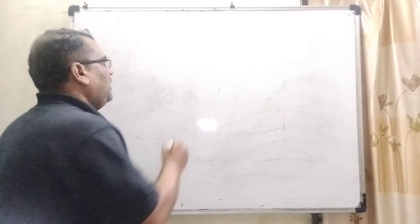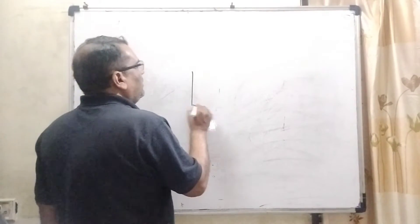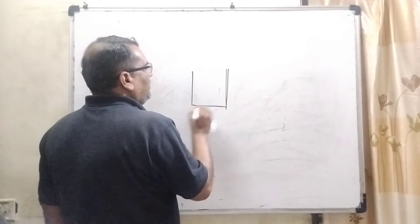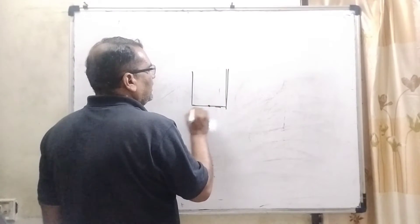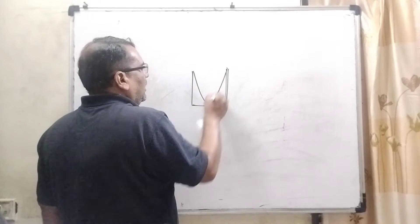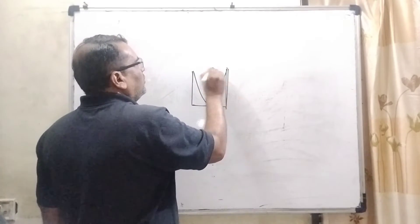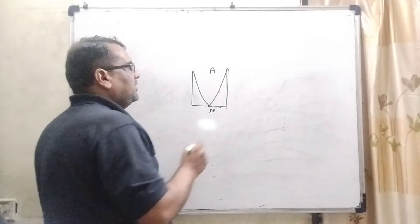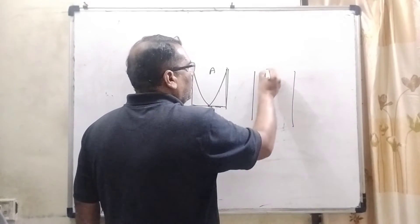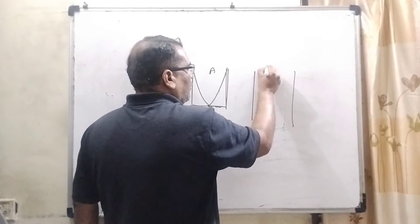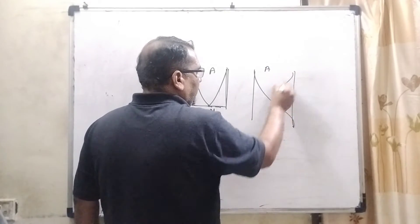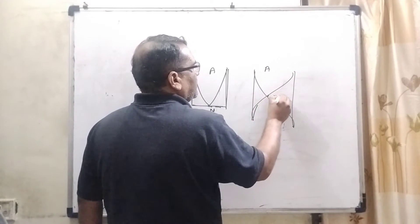As we know, in a closed organ pipe, at the closed end a node is formed, and at the open side an antinode is formed. In the same way, in an open organ pipe, both ends are open, so therefore antinodes are formed at both ends and a node is formed exactly in the middle.